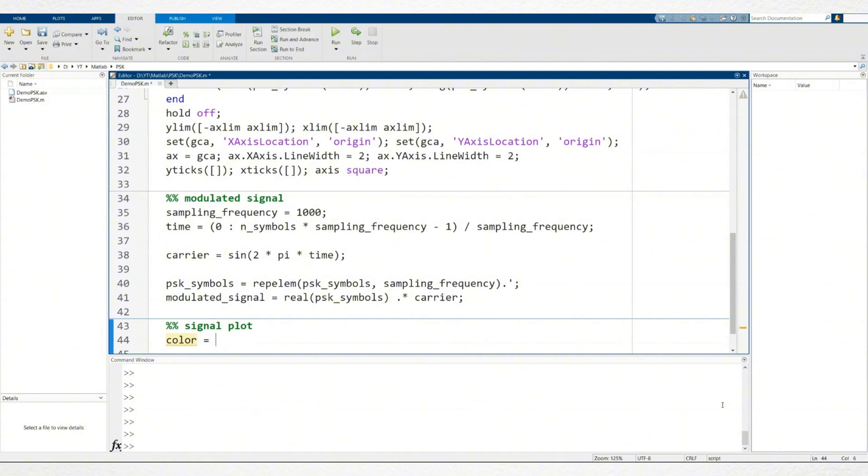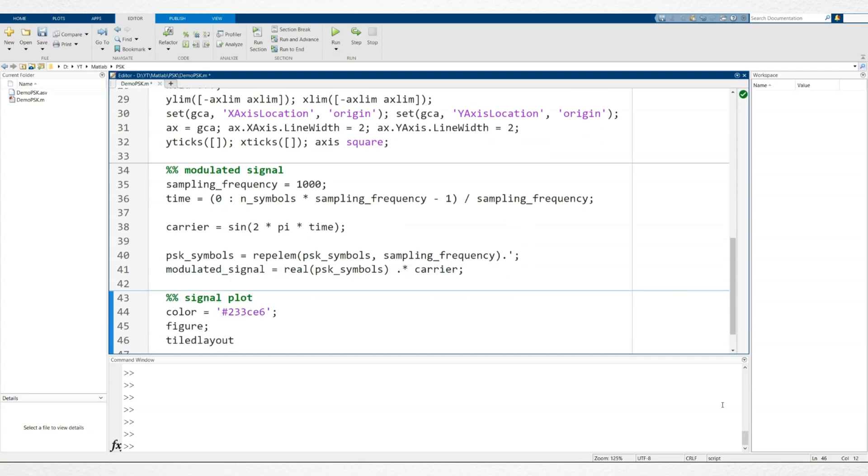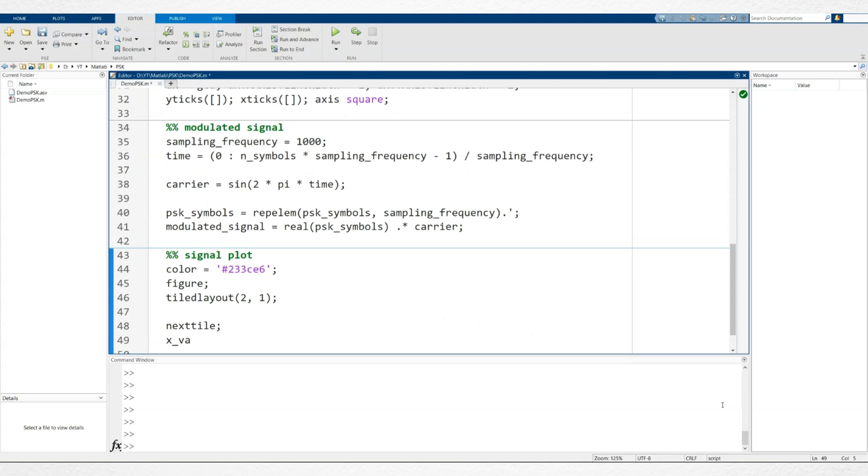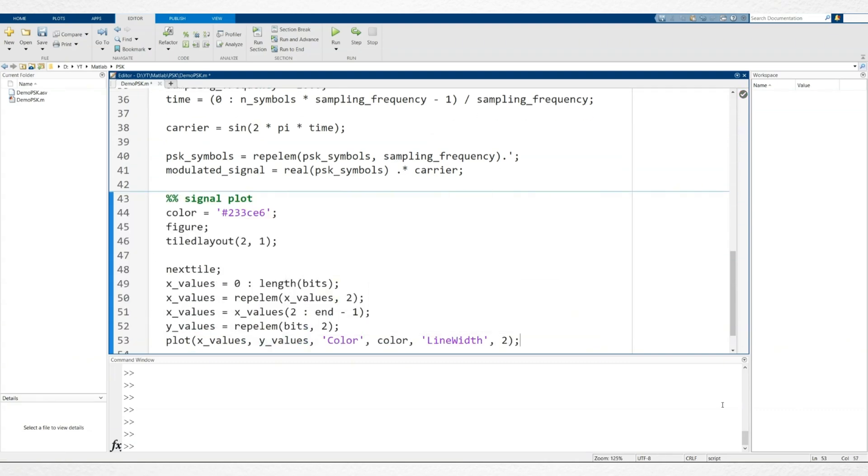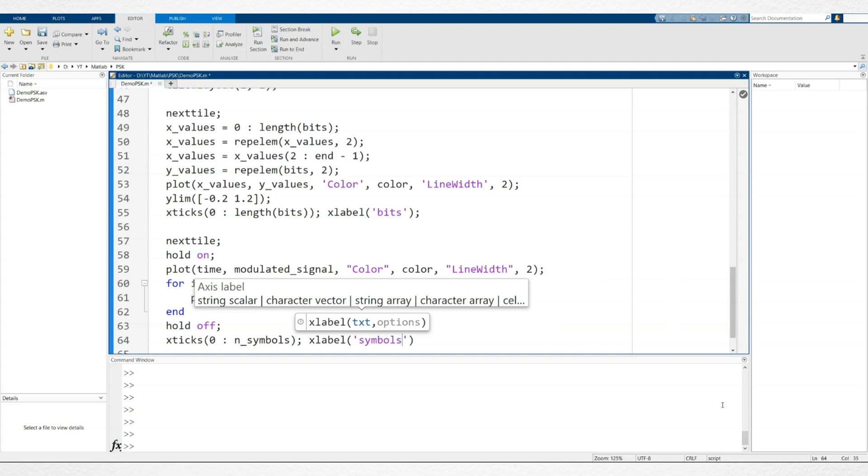Now, let's plot our signal. We'll use a tiled layout to divide the plot into 2 sections. The top section will display the transmitted bits, while the bottom will show the modulated sine wave for each symbol. With that, our code is complete. Let's run it!